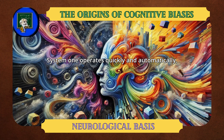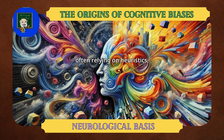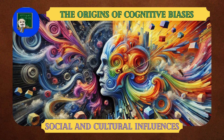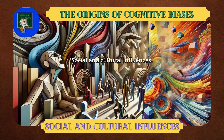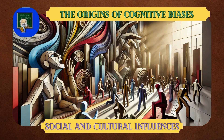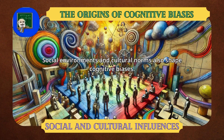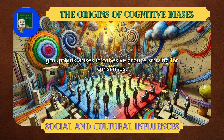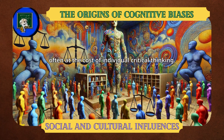System 1 operates quickly and automatically, often relying on heuristics, while System 2 is slower, requiring conscious effort and reasoning. Social and Cultural Influences: social environments and cultural norms also shape cognitive biases. For example, groupthink arises in cohesive groups striving for consensus, often at the cost of individual critical thinking.